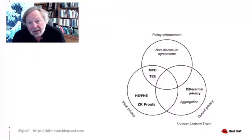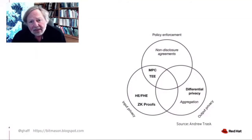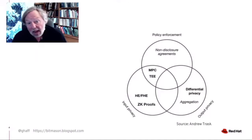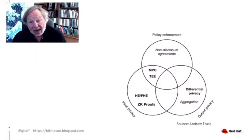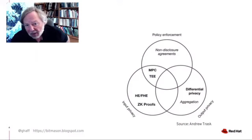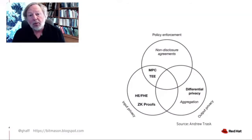Before we dive down into the details, let's look at a map of the territory, so to speak. This comes from Andrew Trask of OpenMind, showing data being computed upon and aggregated. You see here things like homomorphic encryption, fully homomorphic encryption, and zero-knowledge proofs. I'm not going to spend time there today because fully homomorphic encryption, while a very interesting technique, allows you to have computation done on a public cloud provider where the data being worked on is all encrypted.